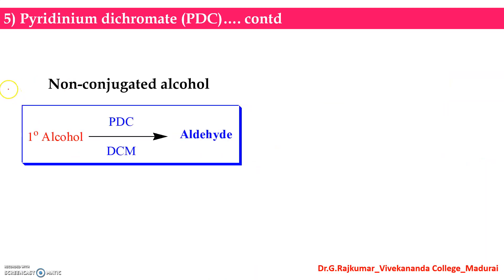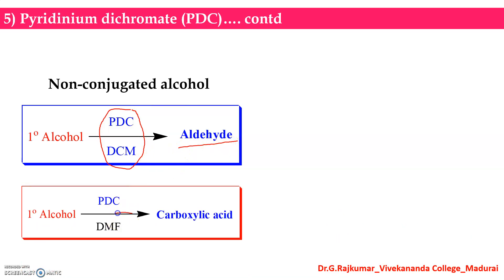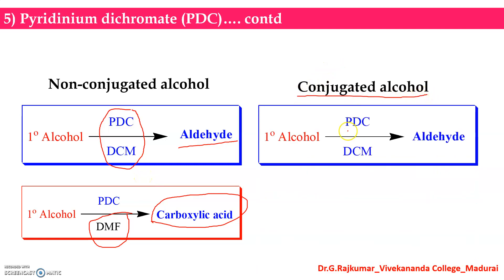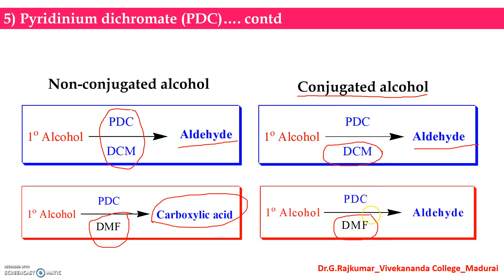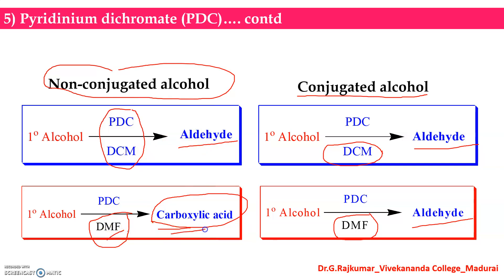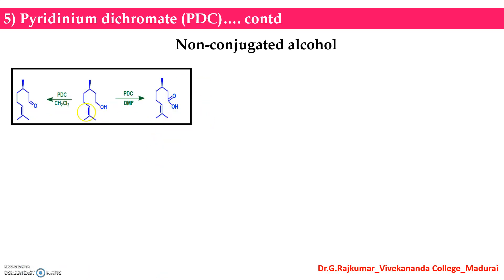For non-conjugated alcohols: in the presence of PDC and DCM (dichloromethane) you get aldehyde as a product, but in the presence of DMF you get carboxylic acid as a product. For conjugated alcohols, carboxylic acid is not the product. A primary alcohol is oxidized into an aldehyde in DCM, and even in DMF you get aldehyde. But for non-conjugated alcohols, changing the solvent gives different products: DCM gives aldehyde, DMF gives carboxylic acid.